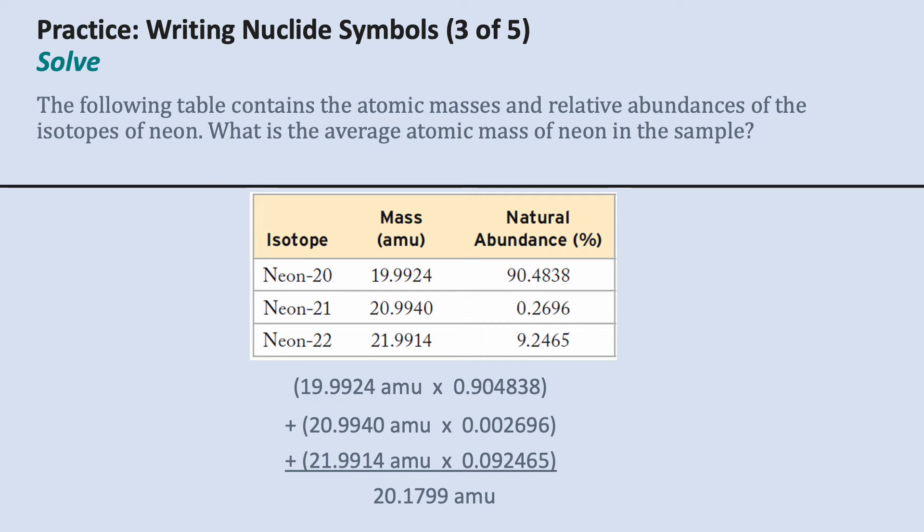The top line, that 19.9924, that's the atomic mass of neon-20, and the 90% abundance written as a decimal is 0.904838. Then the second line is my neon-21, which has a mass of 20.9940.